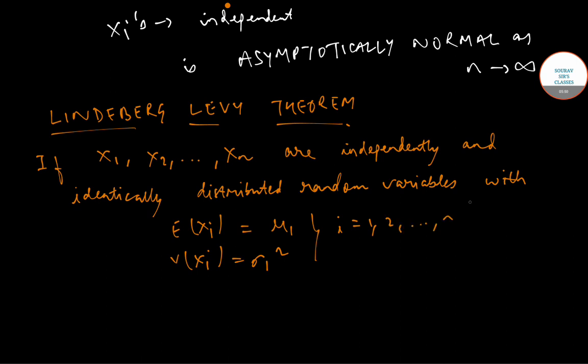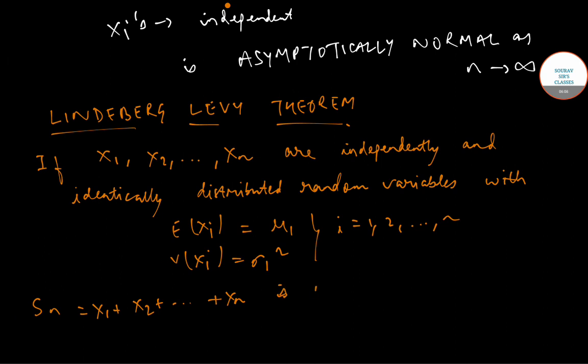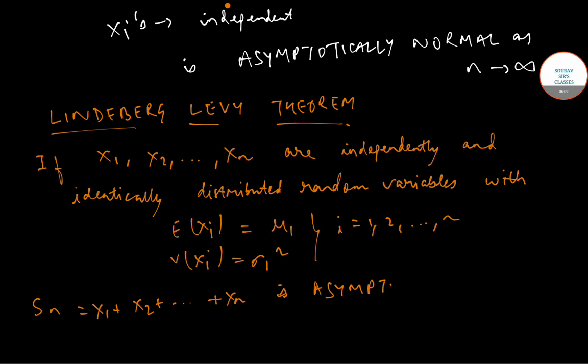then the sum Sn equals x1 plus x2 and so on up to xn is asymptotically normal with mean mu equals n mu1 and variance sigma square equals n sigma1 square.